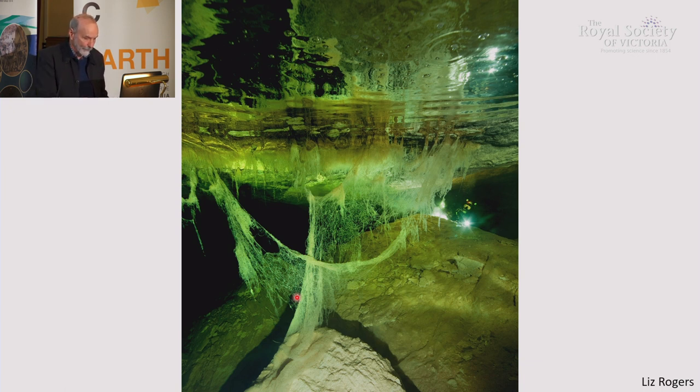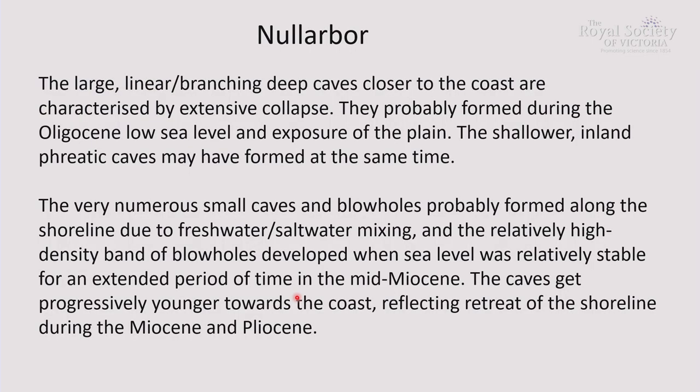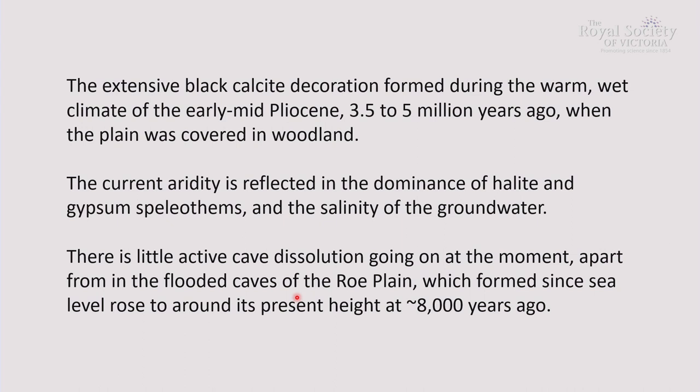These Roe Plain caves can only have formed since sea level reached its present elevation, around 8,000 years ago — in contrast to the other Nullarbor caves, they appear quite recent and are probably still forming. To recap: the deep coastal caves formed during the Oligocene low sea level; the shallower inland phreatic caves may have formed at the same time; the blowholes formed later, probably in the mid-Miocene during a sea level stillstand. The black calcite decoration is mostly dated to 3.5 to 5 million years ago, indicating a warm wet climate when Thylacoleo roamed forests. Currently it's very arid and only the flooded Roe Plain caves appear to still be dissolving.